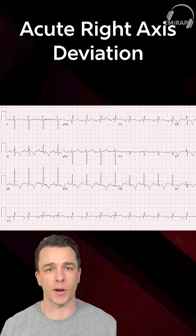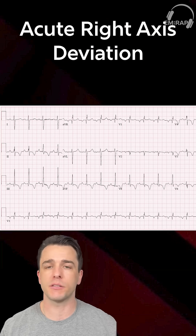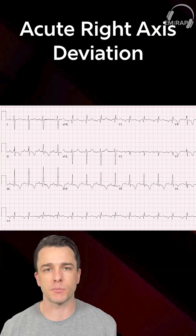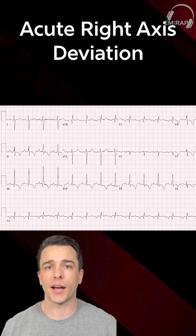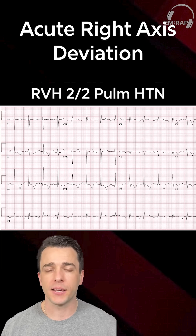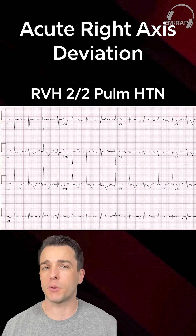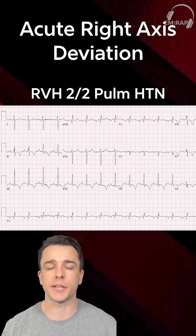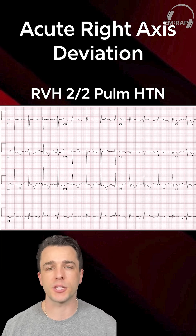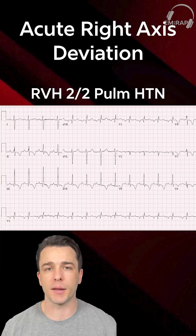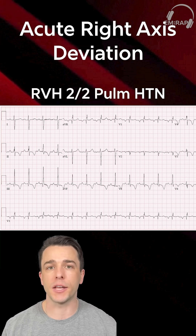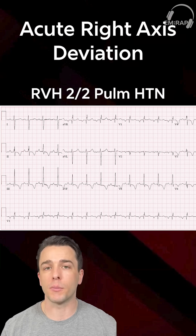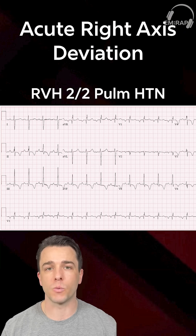If this patient has a prior EKG and they have right axis deviation, they've been a long-time smoker, or maybe they've never had an ECG done and they're not symptomatic, this could just be pulmonary hypertension from untreated emphysema or COPD over time. Don't forget obstructive sleep apnea as a cause of this chronic pulmonary hypertension as well.